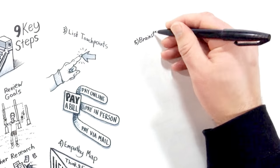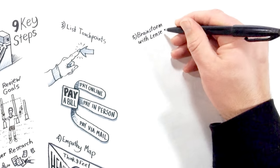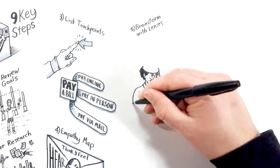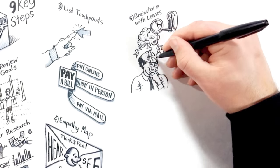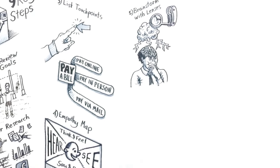Number five, brainstorm with what we call lenses. This means we generate ideas in a short period of time with words representing key concepts, brand attributes, or mindsets that help us look at a problem in a different way.